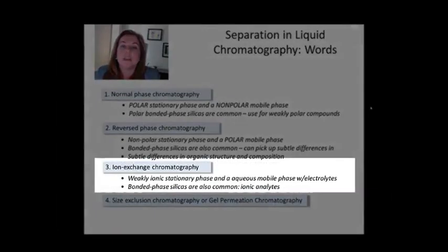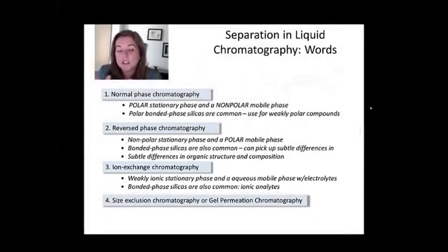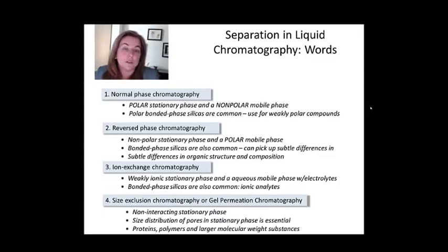Ion exchange chromatography is an example where you're using electrolytes or salts in polar mobile phases to mediate and tune whether or not an analyte sees or doesn't see the stationary phase. And finally, the size exclusion or molecular exclusion chromatography, which really explores and separates on the basis of size strictly. It's an entropic separation.